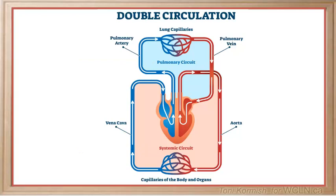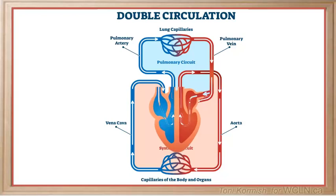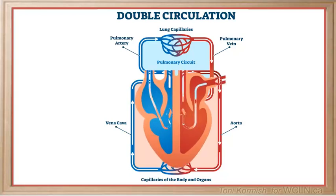The pulmonary circulatory system involves the heart and lungs and is important for oxygen and carbon dioxide exchange. We will begin with a brief introduction to the four chambers of the heart. You will study the heart in more detail later in this unit.